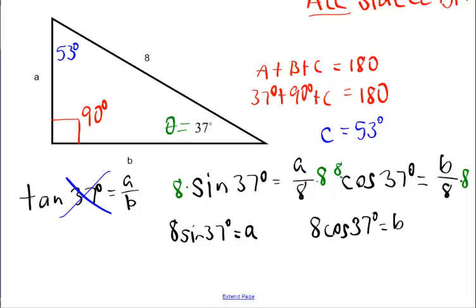And, then just punch into your calculator, 8 sine 37, make sure you are in degree mode. And, A should be about 4.81 and punch 8 cosine 37 into your calculator, you need to be in degree mode. And, B should be somewhere around 6.39 and there are all the sides of your right triangle. That's all there is to it, don't let this be hard.